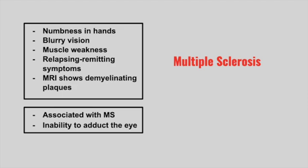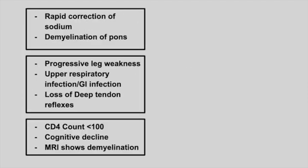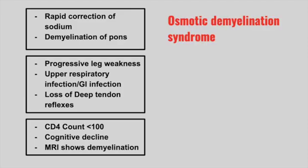Next is a condition seen in MS — an inability to adduct the eye. This is a medial longitudinal fasciculus lesion, or MLF lesion. Next is a patient who had a rapid correction of sodium and now has demyelination of the pons. This is osmotic demyelination syndrome.